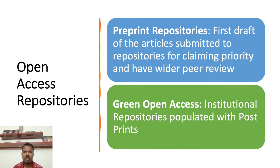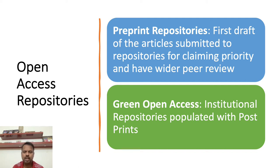Earlier I described the golden open access route. There is another route called the green open access route. The green open access route involves making your articles available through open access repositories — institutional repositories or thematic repositories — which are populated with post-prints. Post-prints are the post-peer-review version: once you submit an article to a journal and it undergoes peer review, the editor sends it back to you for incorporation of comments.